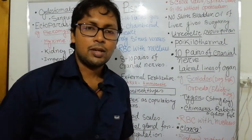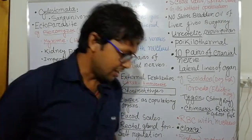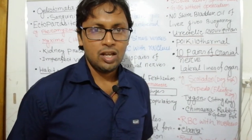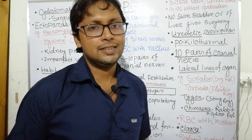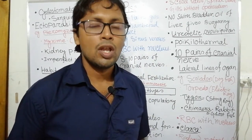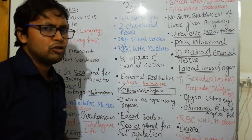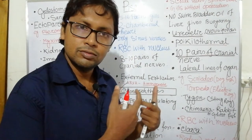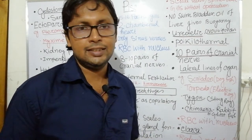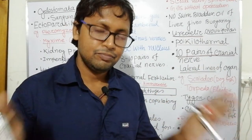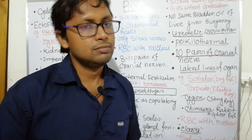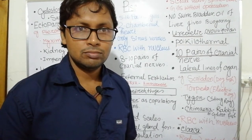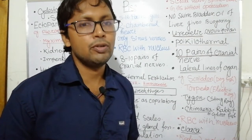Good morning, namaskar friends. We are again here for the NEET Biology class, targeting NEET 2021. Today's topic is animal classification — specifically vertebrates. We shall discuss Cyclostomata and Pisces. Pisces have two different types: Osteichthyes and Chondrichthyes. Vertebrates are divided into two parts: Agnatha (no jaws) and Gnathostomata (jawed). Among the jawless group, they are Cyclostomata. So first we will discuss Cyclostomata.